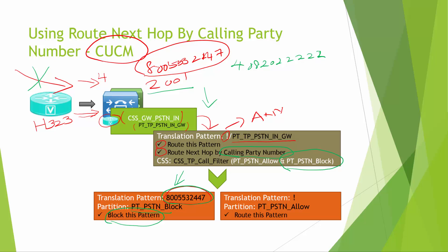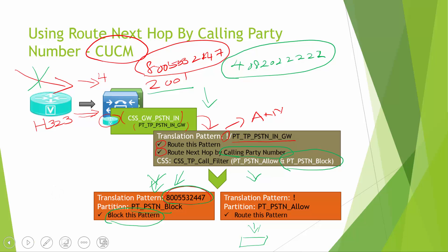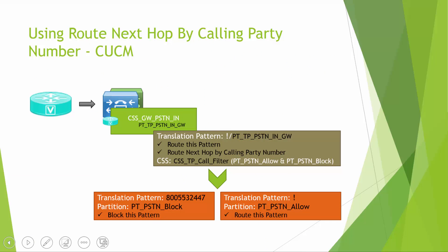If a different call comes in, say with ANI 408-202-2222, the first translation pattern will match the DNIS and route to the next hop. At the next hop, the digit analysis engine checks the ANI: it does not match the specific blocked number, but it does match the '!' pattern — which matches any digits — and routes the call through. Based on the CSS assigned to that translation pattern, the call is sent to a phone, CTI, or whichever endpoint the CSS can reach.